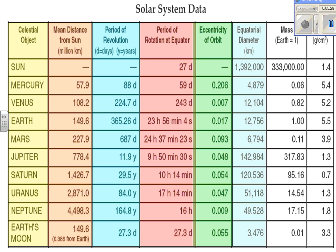The equatorial diameter column gives the width of each celestial object in the solar system. The planet with the greatest equatorial diameter is Jupiter — it is the largest planet in our solar system. Venus and Earth have similar equatorial diameters. These are typically the types of questions asked on the Regents, and you can find the information here.